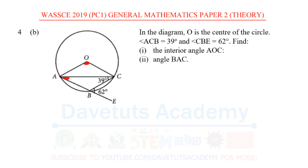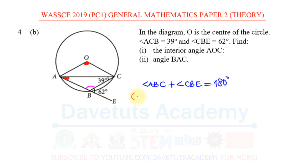There are many ways to solve this question, but the first thing I would like to note is that looking at line ABE, I can see that is a straight line. So I can find angle ABC. I can say angle ABC plus angle CBE — which is given as 62° — will give us 180°, because the sum of angles on a straight line is 180°.